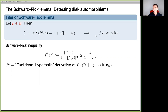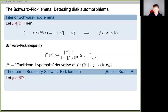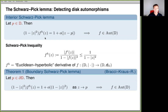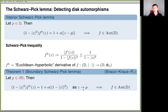We can slightly reformulate this interior Schwarz-Pick lemma to look more similar to previous results. We take the denominator and multiply it to the left-hand side so the expression equals one. This is a boundary version: if you take a point P on the boundary and let z go to P, then under a condition with a slightly stronger error term, the function F actually is an automorphism of the open unit disk.